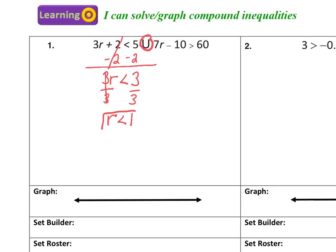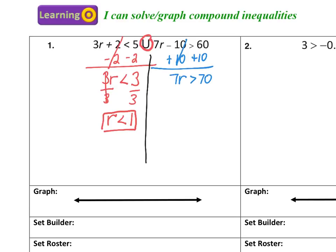So there's my first inequality, and all numbers less than one would be like zero, negative one, negative two. I'm going to now come over to the second inequality and solve it like a two-step equation. I'm going to add 10 to both sides. Now I have 7R is greater than 70. I need to divide both sides by 7 to isolate my variable. And this inequality reads R is greater than 10.